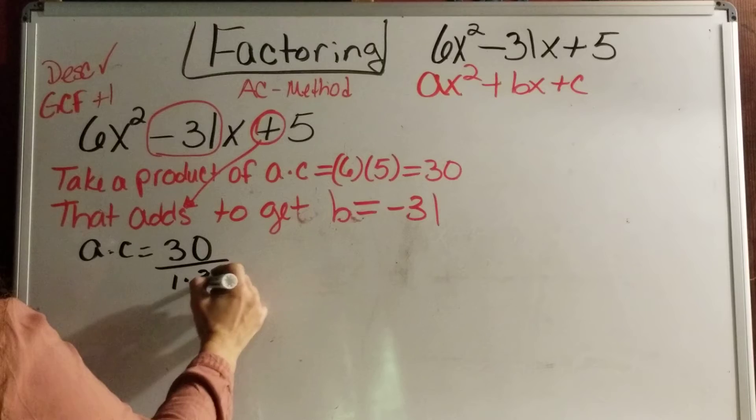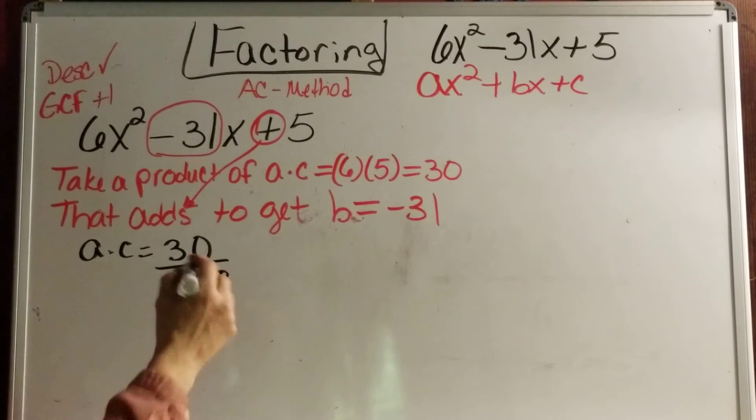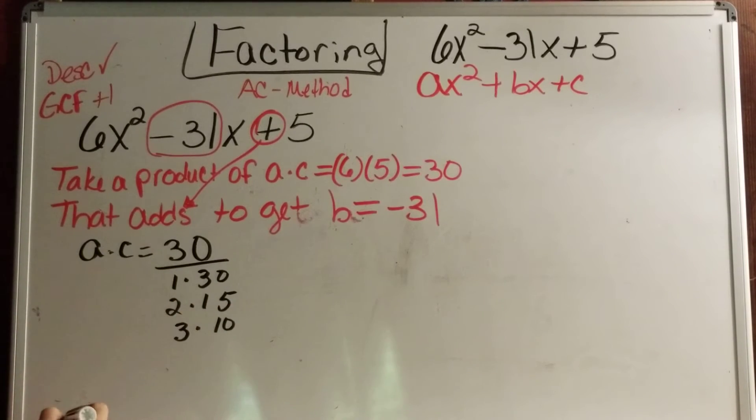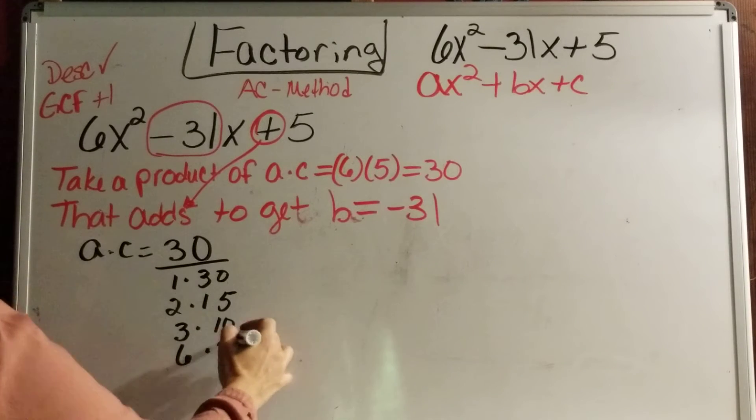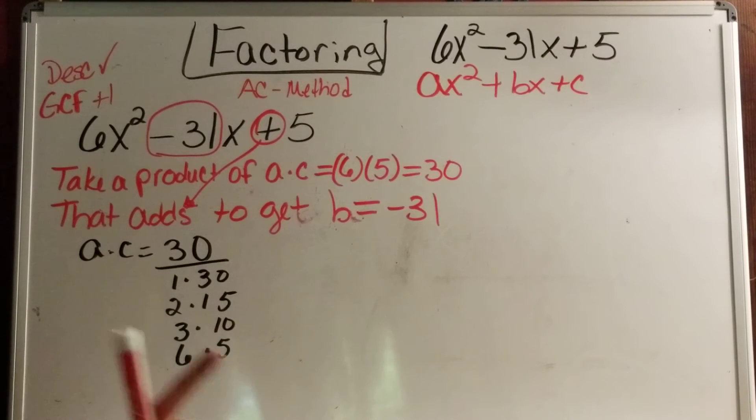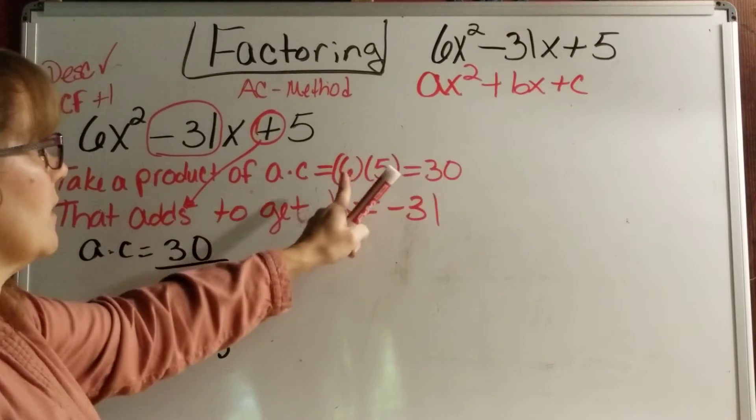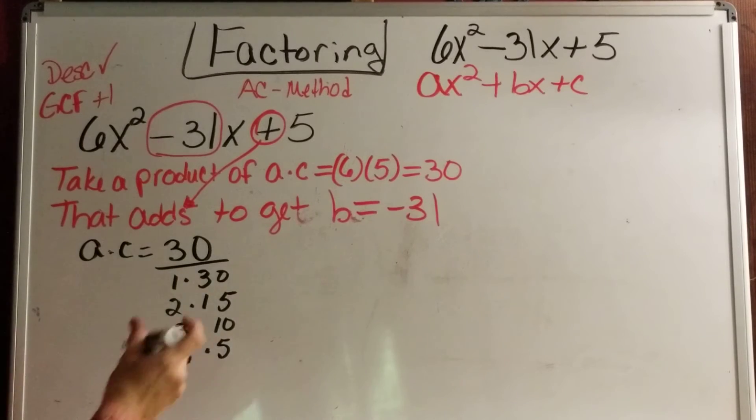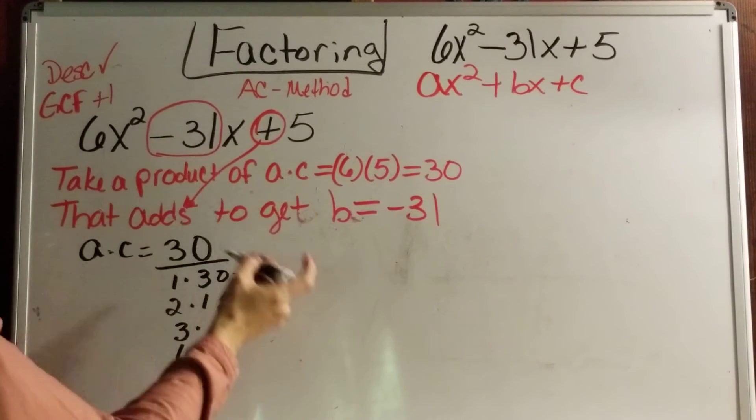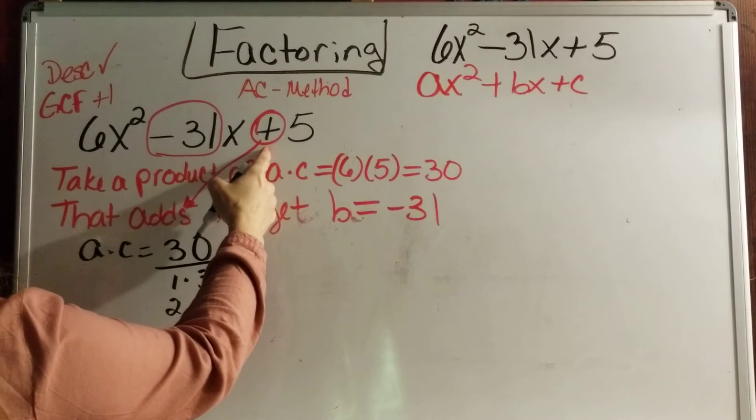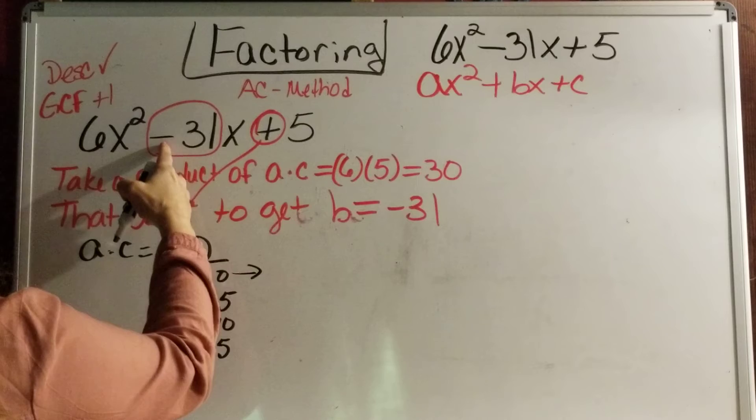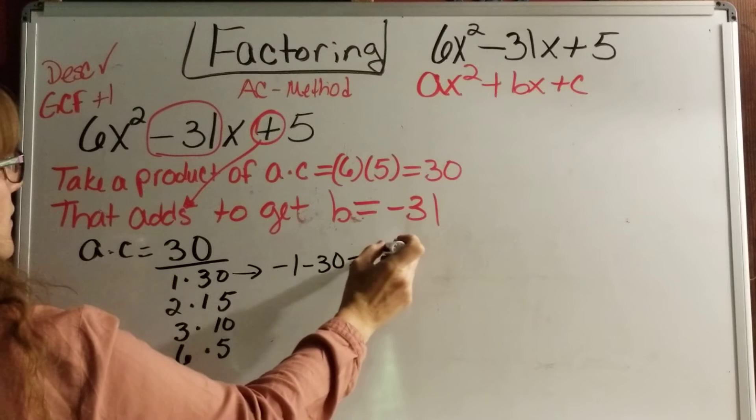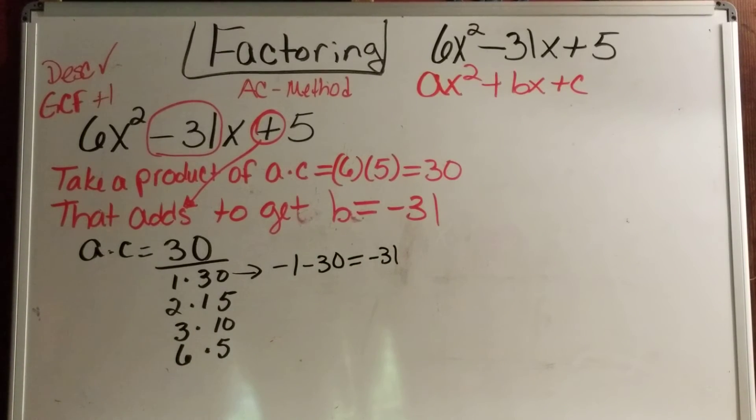We're taking the product of A times C, which is 30, and we're going to see if they add, because that's what that sign says, to give me B. And B is negative 31. So we know it's 1 times 30. We know it's 2 times 15. We know it's 3 times 10. We know that it's 6 times 5 or 5 times 6. So let's go with this one right now.